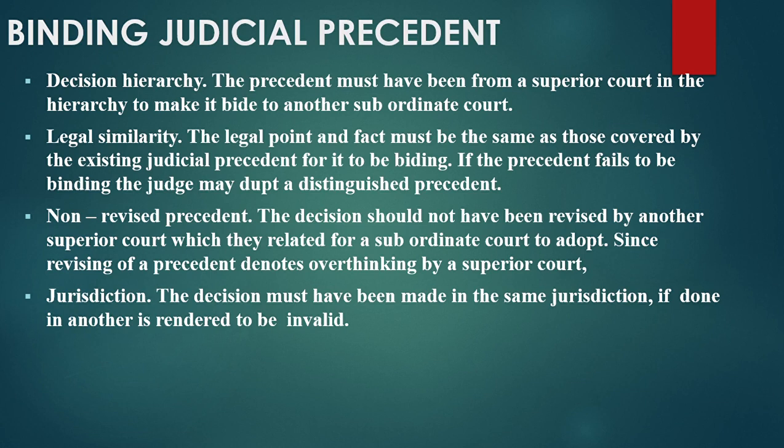Legal similarity is another essential of a binding judicial precedent. The legal point at fact must be the same as those covered by the existing precedent for it to be binding. If the precedent fails to be binding, the judge must adopt a distinguished precedent. So in order for a precedent to be applied to another case, the case must be similar — for example, a case involving robbery with violence.